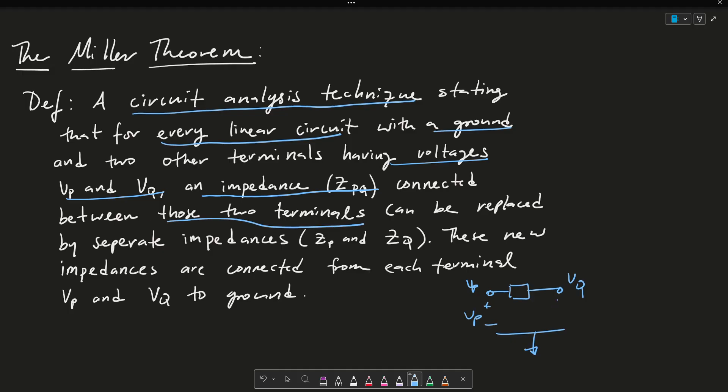There's a voltage VP, there's a voltage VQ, and there's an impedance ZPQ. I want to go ahead and replace this with separate impedances ZP and ZQ. So this looks like ZP going to ground and ZQ going to ground. And the new impedances are connected from each terminal VP and VQ. So this is just the formal written definition, but pictorially this is what we're trying to solve for. It's just a mathematical tool that simplifies our equations when we're doing circuit analysis, and that's really why we consider it when doing high-level circuit analysis methods.